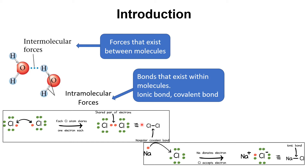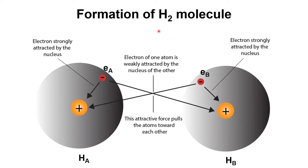Now we'll see what factors affect potential energy for a covalent molecule. The simplest example is H₂, the hydrogen molecule, formed by covalent bonding between two hydrogen atoms — atom Hₐ and atom H_b. There is attraction between electrons and protons because electrons are negatively charged and protons are positively charged, so each electron is strongly attracted by its own nucleus.